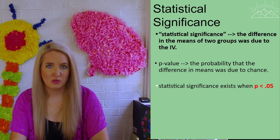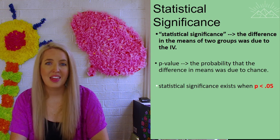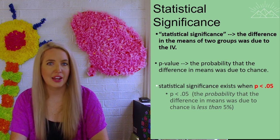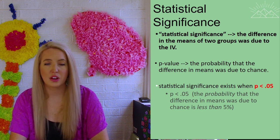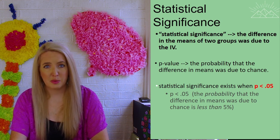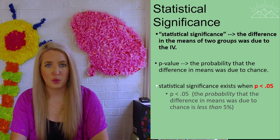So in psychology, our p-value, our statistical significance, exists when p is less than 0.05. That means that there's less than a 5% chance that we got our results on accident or due to a confounding variable. Meaning that there's more than a 95% chance that what we did in our experiment, our independent variable actually caused the results that we see.